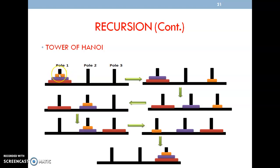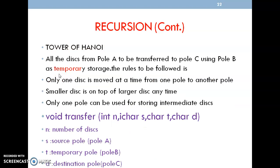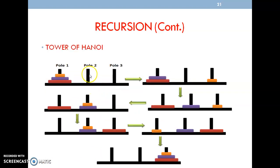The second condition is: the smaller disc must always be on top of the larger disc at any time — smaller should always be on top. The third condition: only one intermediate disc can be stored on the temporary pole at a time, so you cannot take two discs from pole 1 and store them on pole 2 at once. Each time, only one disc can be placed on the intermediate pole.